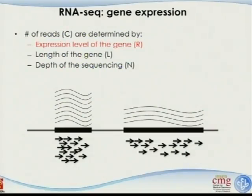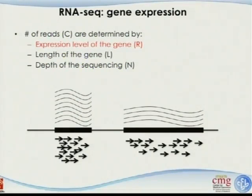But things become a little bit more complicated, because as you can see, the longer the gene is, even with a much lower expression level, if you only count the total number of reads, they probably are the same. So it's not a very accurate measurement — it's only based on the counts. We know that the number of counts detected is determined by a couple of factors.